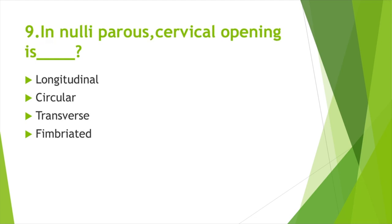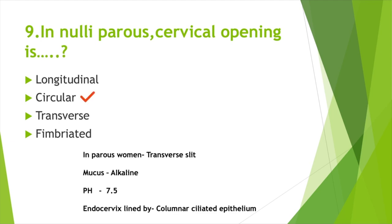In early parous cervical opening is — Option A: Longitudinal, Option B: Circular, Option C: Transverse, Option D: Fimbriated. Answer: Option B, Circular. In parous women it is a transverse slit. Its mucus is alkaline in nature, pH 7.5. Endocervix is lined by columnar ciliated epithelium.